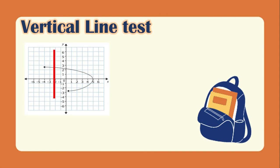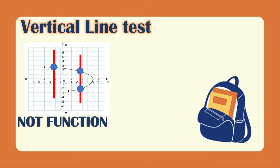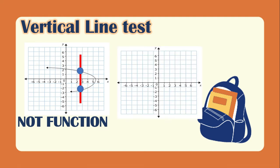For the second graph, if we draw a vertical line here it passes through the graph once, but if we draw the vertical line on the right side it passes through two points. So this is not a function. You can draw a vertical line anywhere in the graph — it should pass through only one point. If it passes through two or more points, it is not a function.